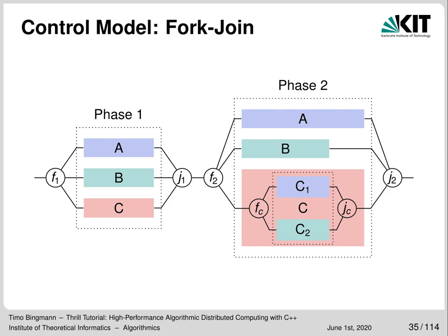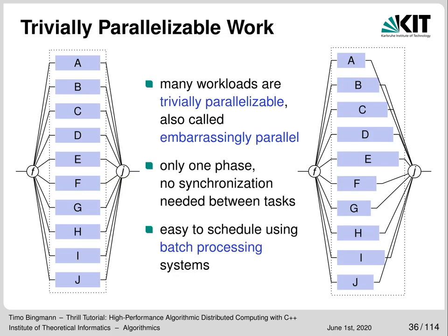The challenge is to construct phases in which all parallel tasks run equally long, such that computation resources are efficiently used — since the phase takes as long as the longest thread inside it. The simplest case is when the workload can be split up perfectly into independent equal-sized subtasks, called trivially parallelizable or embarrassingly parallel. When subtasks are not equally long, one needs a load-balancing system such as a batch scheduler which assigns subtasks to processors.